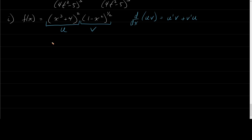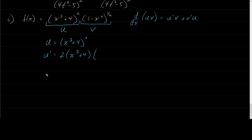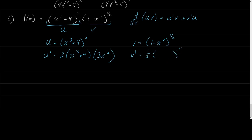If u equals x cubed plus 4 squared, then u prime: the outside is something squared, so the derivative is 2 times x cubed plus 4, times by the chain rule the derivative of the inside, which is 3x squared. For v equals 1 minus x squared to the 1 half: v prime is 1 half times 1 minus x squared to the negative 1 half, times by the chain rule the derivative of the inside, which is negative 2x.